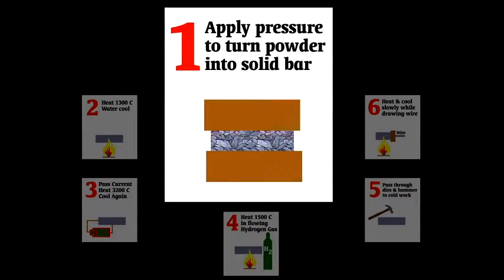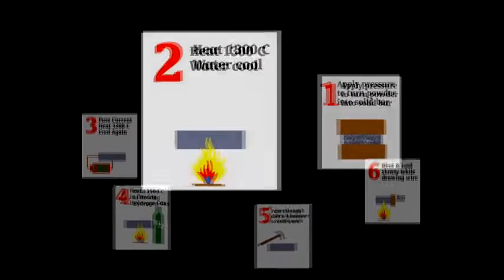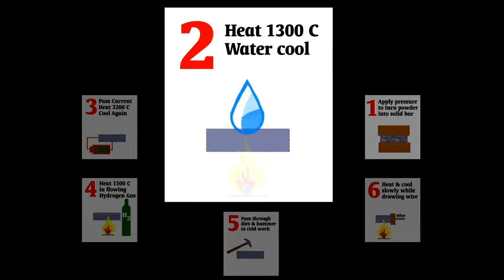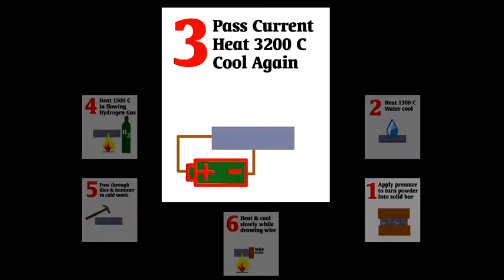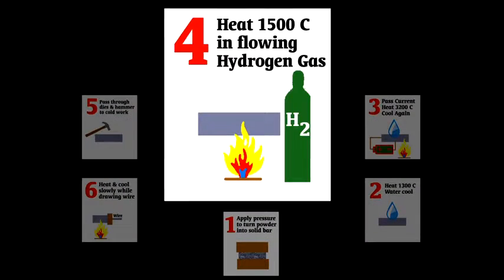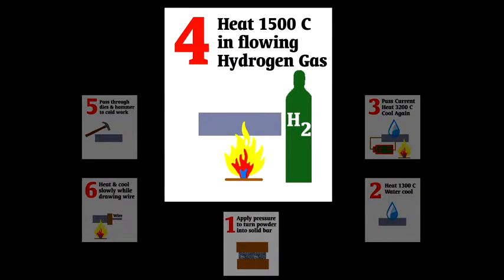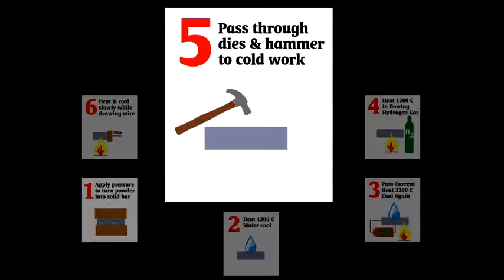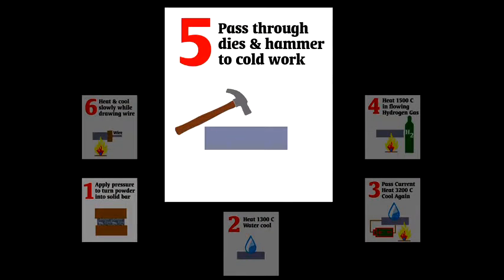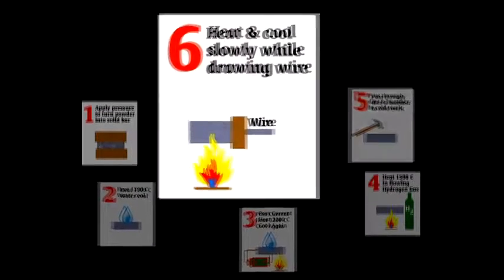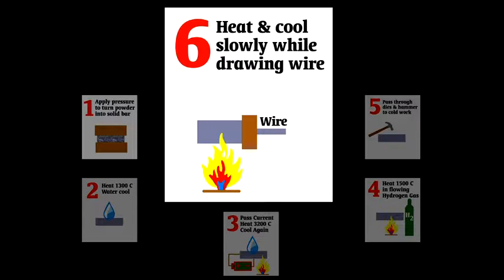One, apply great pressure to turn tungsten powder into a fragile bar. Two, heat it to 1300 degrees Celsius and then cool it with water. Three, pass a current through the tungsten while heating it to 3200 degrees Celsius and then cool again. Four, heat yet again to 1500 degrees Celsius, but this time while flowing hydrogen over it. Five, pass it through a series of dies to cold work it and then hammer it. And then the sixth and final step, heat it and then reduce the temperature gradually while drawing it into a one millimeter diameter wire.